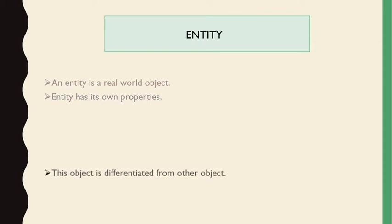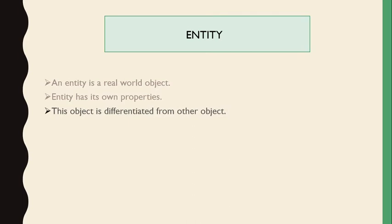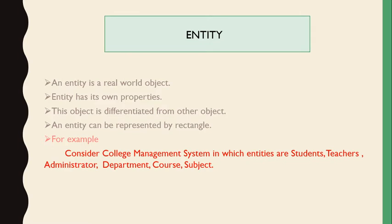These objects are differentiated from other objects. For example, a particular student (student one) is identified and differentiated from other objects. An entity can be represented by a rectangle. For example, in a college management system, entities include students, teachers, administrators, department, course, and subjects — these are the real-world objects known as entities.